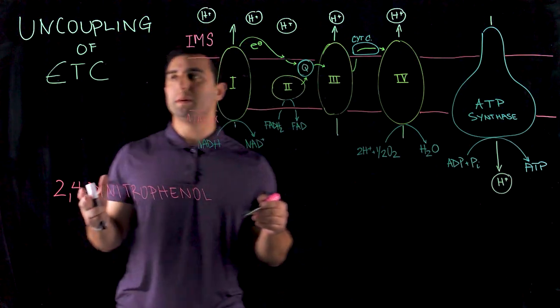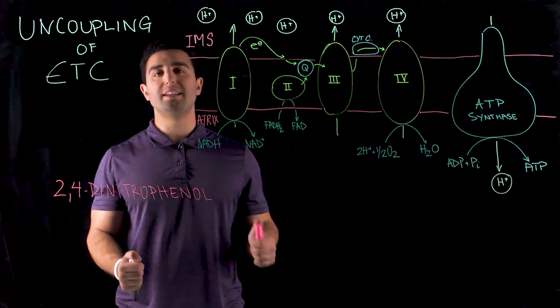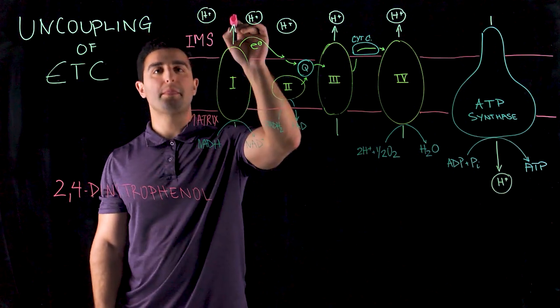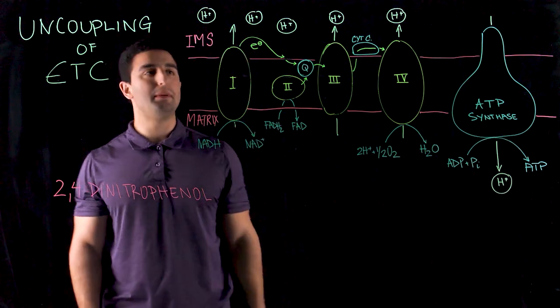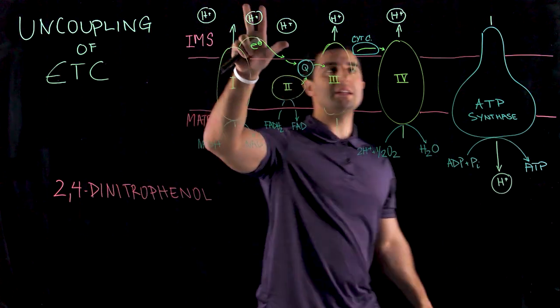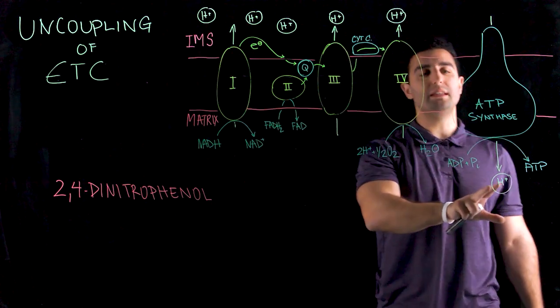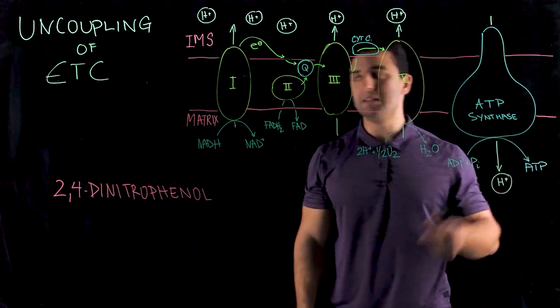Before when we talked about the actual coupling process of electron transport chain, we referred to the chemiosmotic gradient, where we have a transfer of protons across the matrix and into the inner membrane space in order to create this gradient, this osmotic gradient, to activate the ATP synthase and generate ATP.